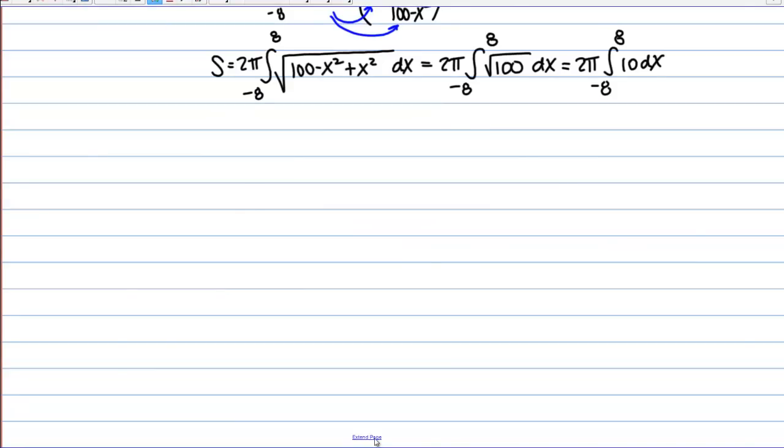So if I take my anti-derivative, I have 2 pi out front and then the anti-derivative of 10 is 10X and we're going from negative 8 to 8.